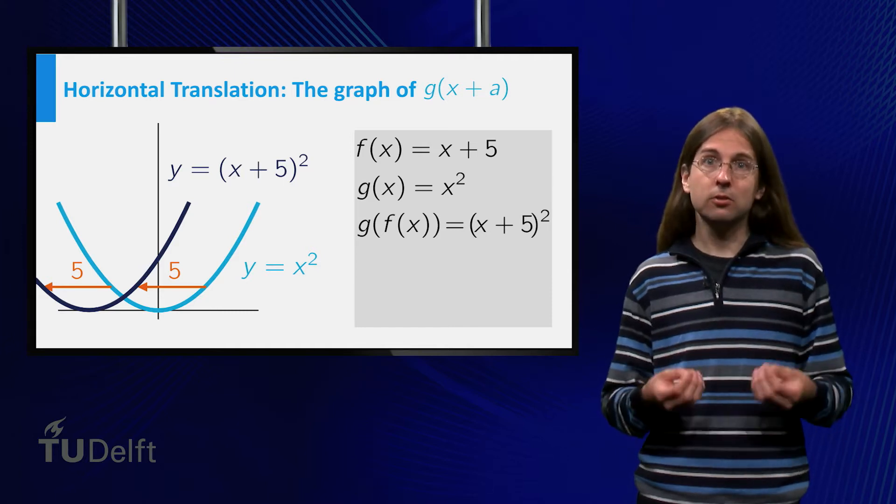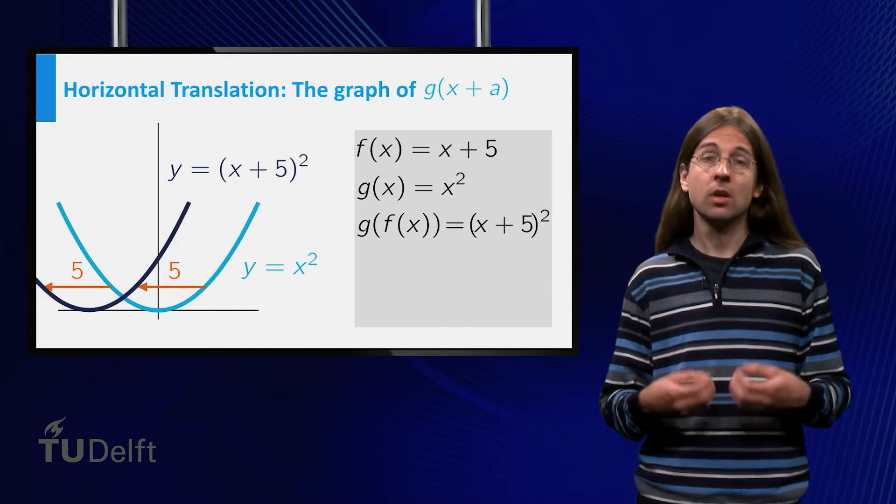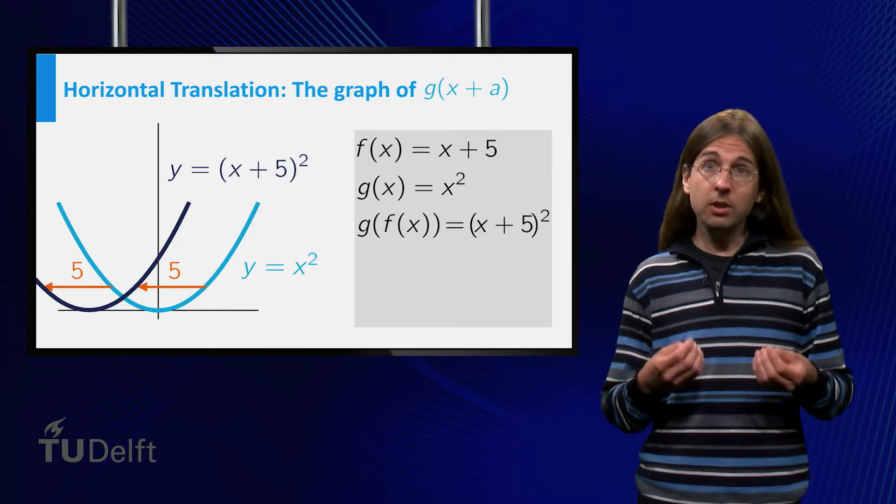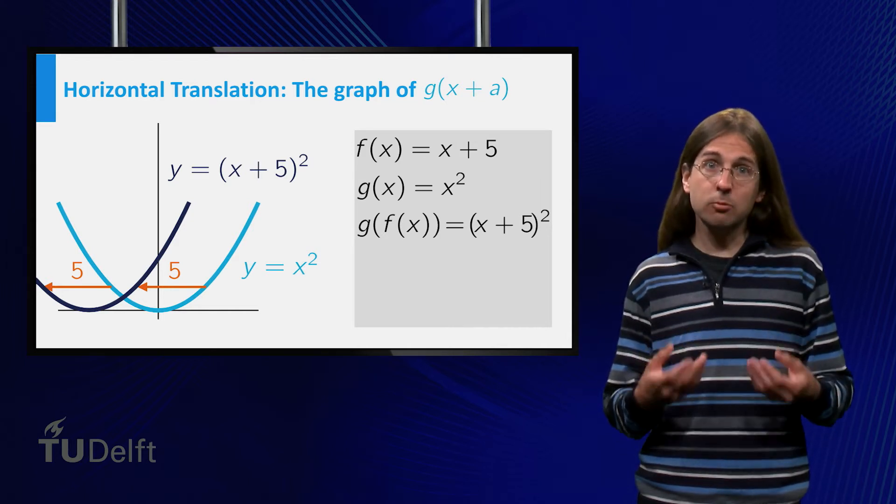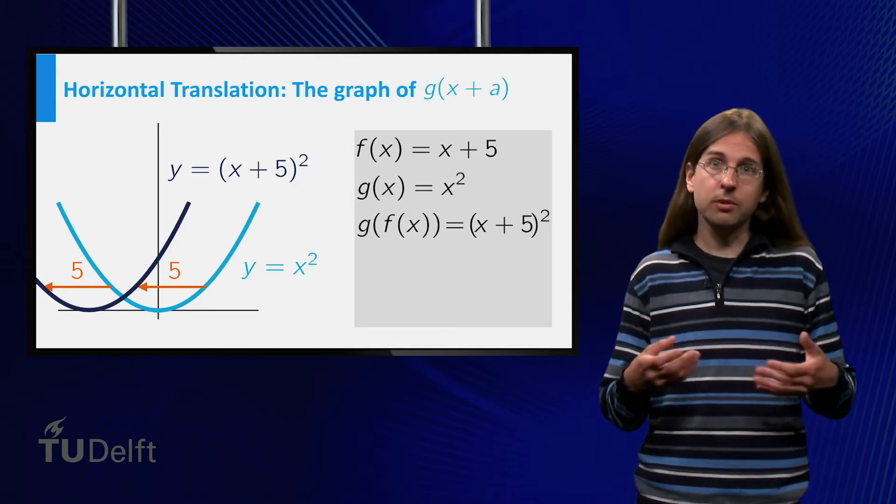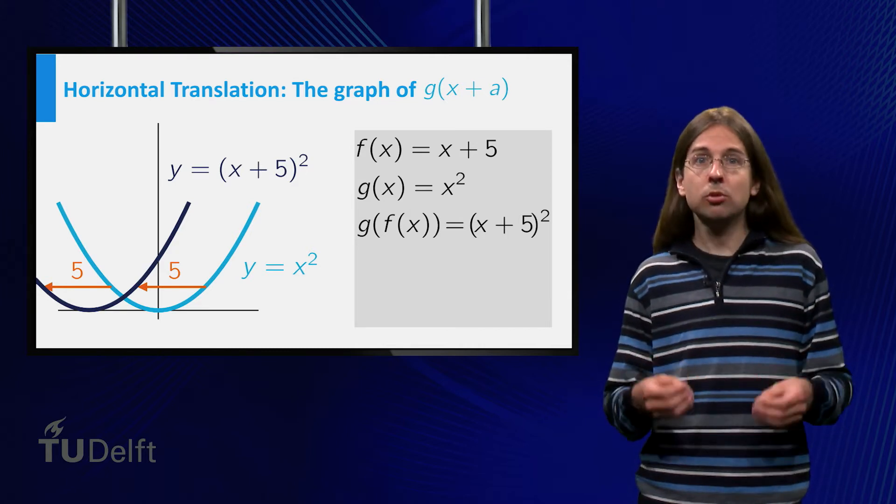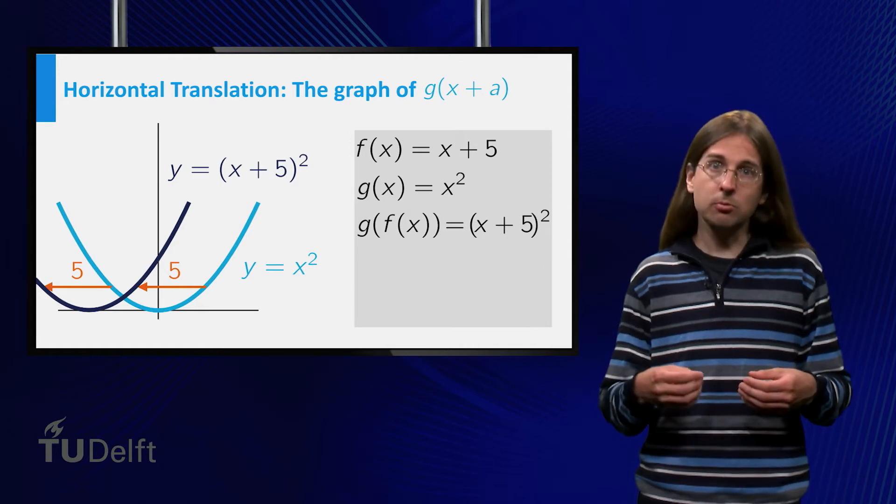This might seem counterintuitive at first. However, if we consider x plus 5 squared, then the value at x equals minus 5 of x plus 5 squared is equal to the value at x equals 0 of x squared.